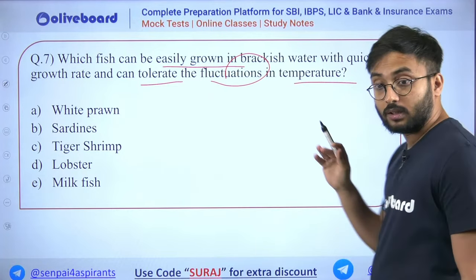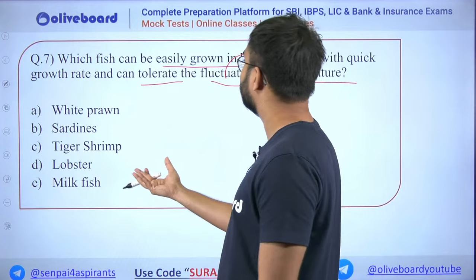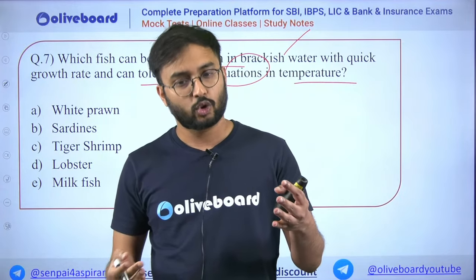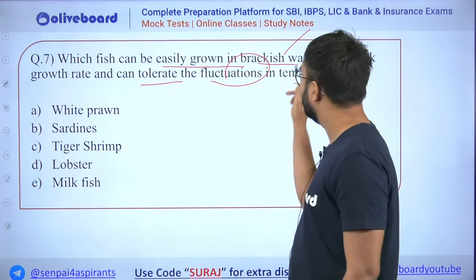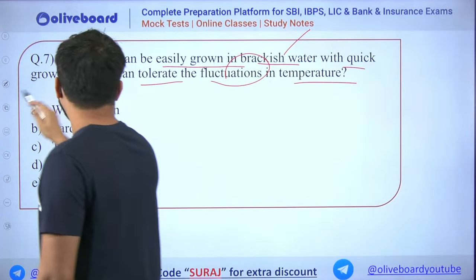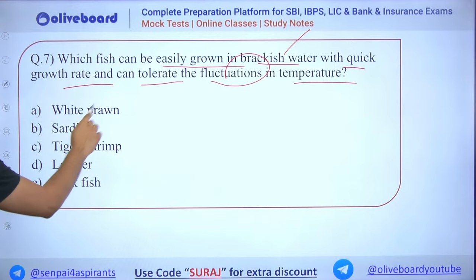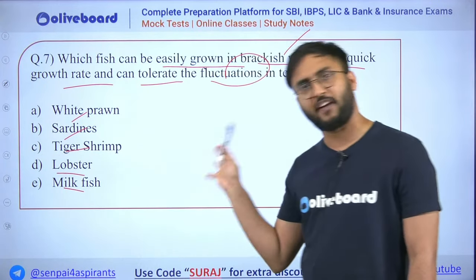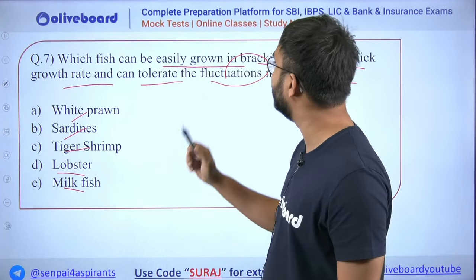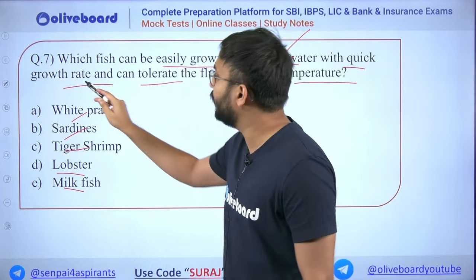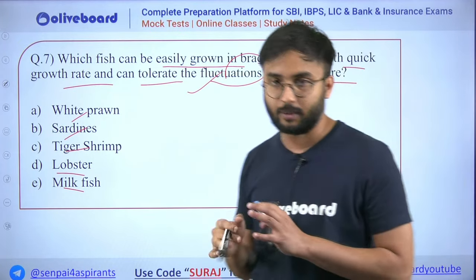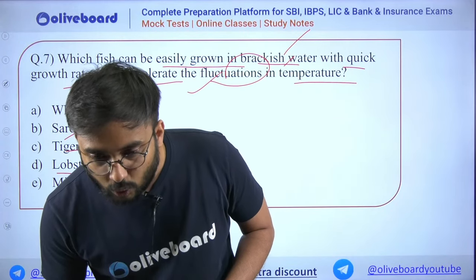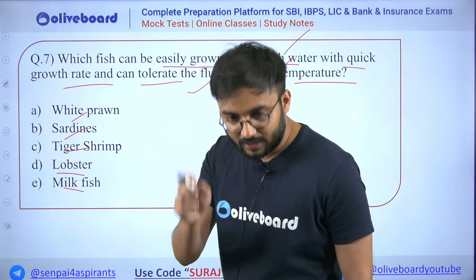Next: Which fish can easily grow in brackish water with quick growth rate and can tolerate fluctuations in temperature? Brackish water means estuarine water — slightly salty but not as salty as ocean. Options: white prawn, sardines, tiger shrimp, lobster, milk fish.